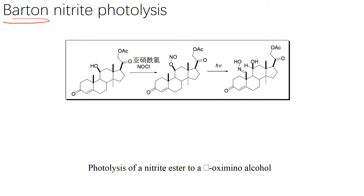巴顿我们已经讲了三个人名反应，这个是最早的一个，叫做巴顿Nitrite Photolysis，也就是巴顿的亚消的光解。它的核心问题涉及到Delta位，这应该是Delta。